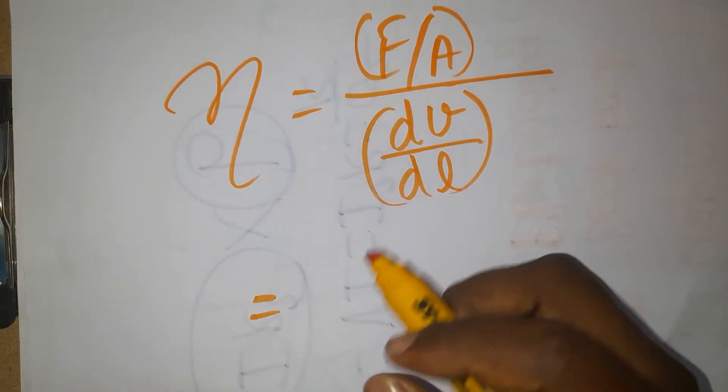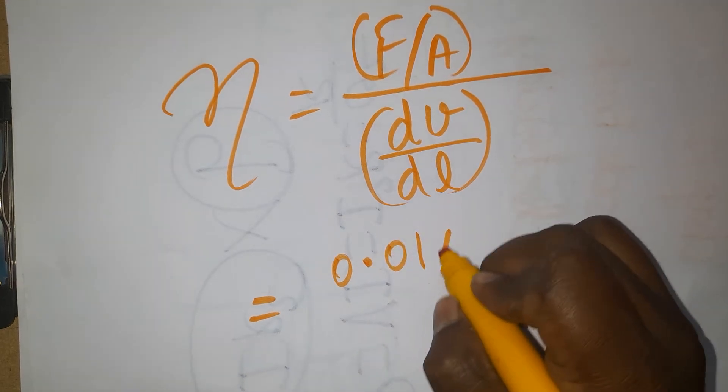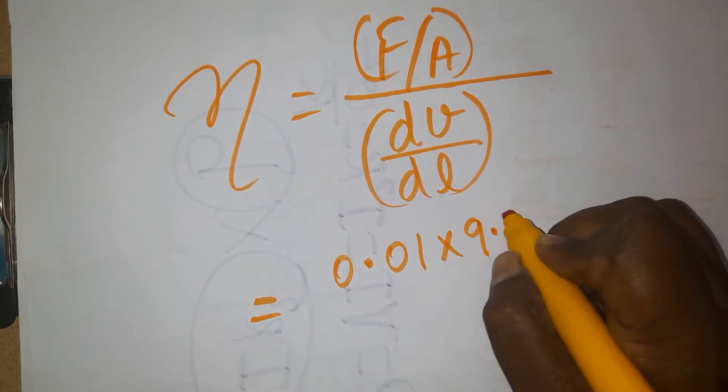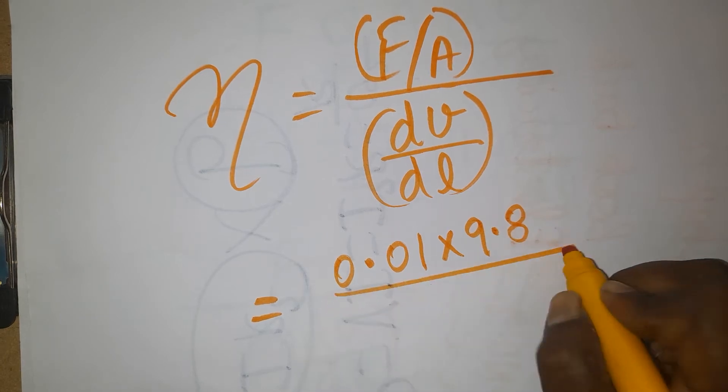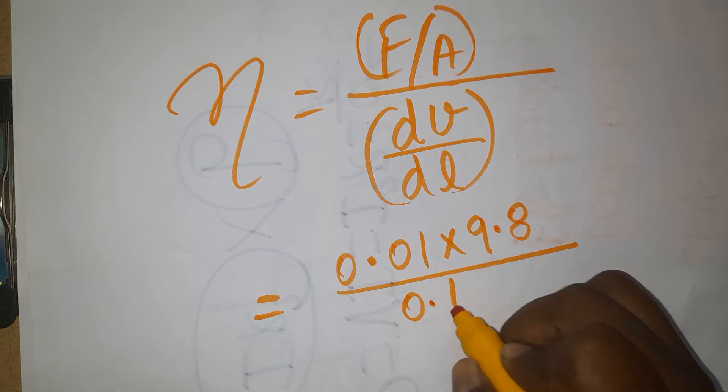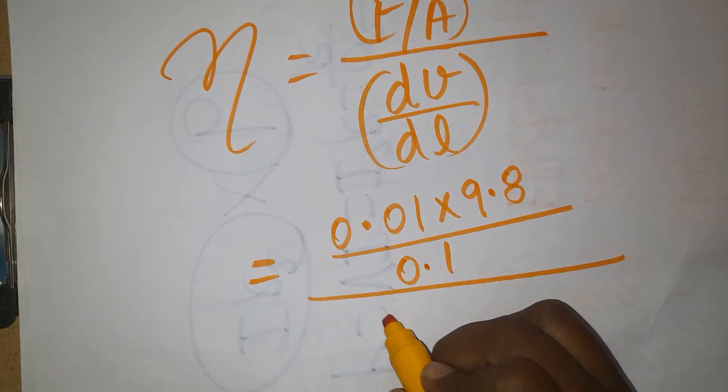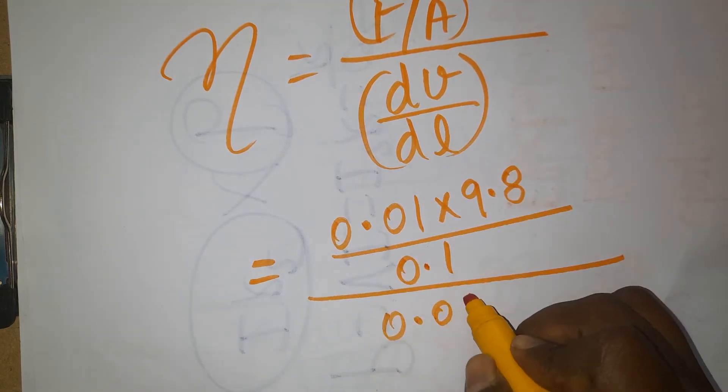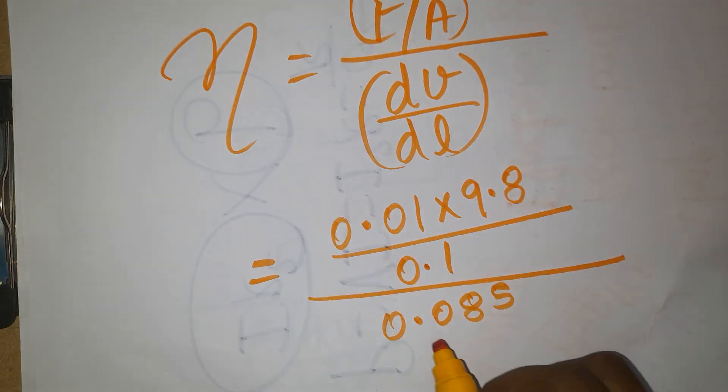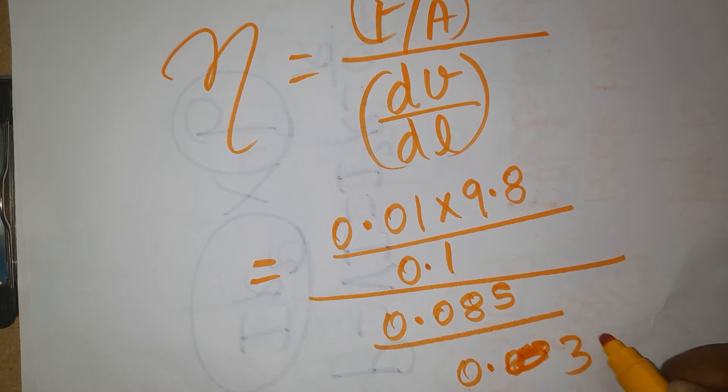Now, force is mass times gravity. Mass is 0.01, gravity is 9.8 or 10, we'll take 9.8. In the denominator, area is 0.1, already given. Everything you should follow in SI units. Velocity is going to be 0.085 and the length thickness is given as 0.03 or 0.3.